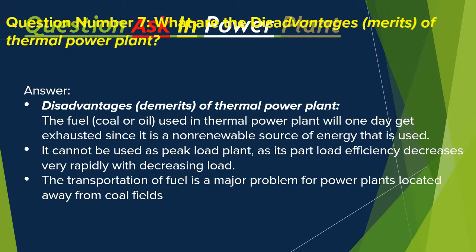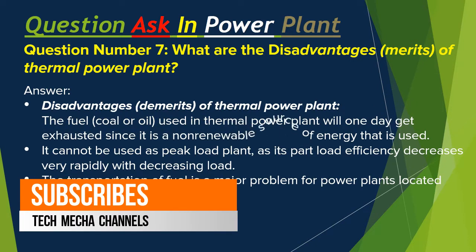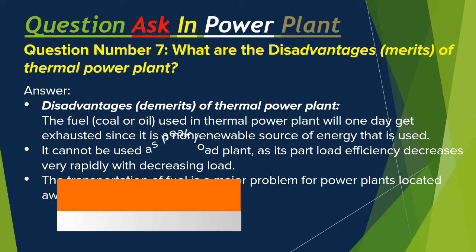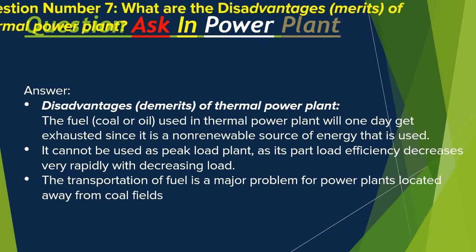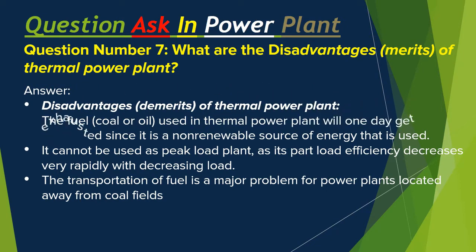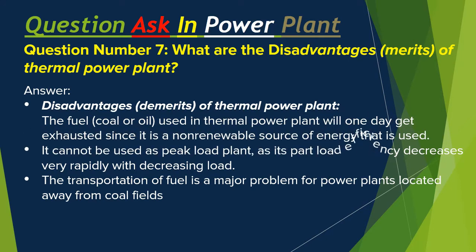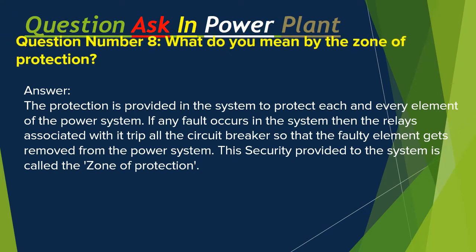Question number seven: What are the disadvantages and demerits of a thermal power plant? Answer: The fuel — coal or oil — used in a thermal power plant will one day get exhausted since it is a non-renewable source of energy. It cannot be used as a peak load plant as its part load efficiency decreases very rapidly with decreasing load. The transportation of fuel is a major problem for power plants located away from coal fields. The cost of power generation is considerably high compared to a hydroelectric power plant.